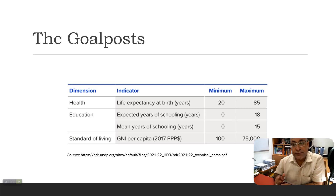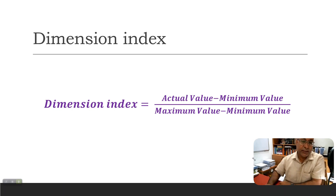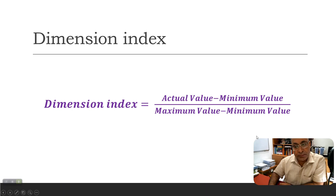We calculate the dimension indices the same way as earlier. We take the actual value, subtract the minimum value — this is the numerator — and divide by the denominator, which is the range from maximum to minimum. This number will always lie between 0 and 1.